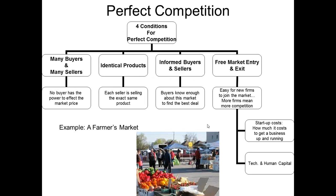So let's start with perfect competition. A market that is perfectly competitive — and this by the way is the hardest one to find examples of, because it is so tough to meet the conditions for perfect competition — has many buyers and many sellers. These buyers and sellers really don't have any influence on the market price, which means they don't have a lot of market power.